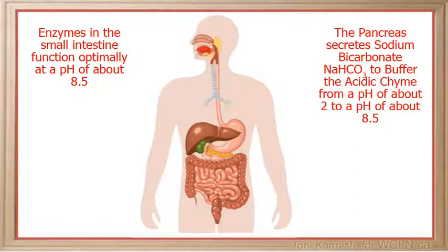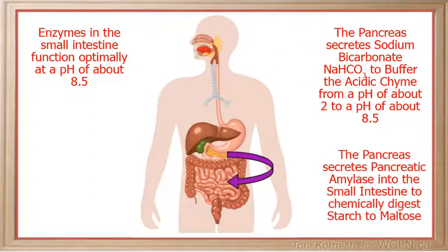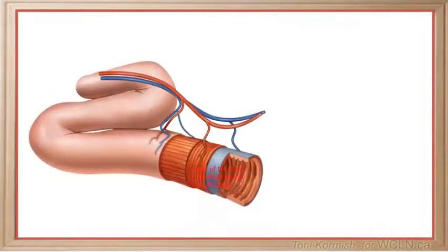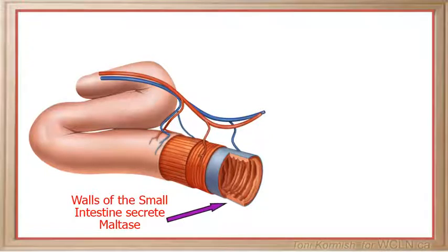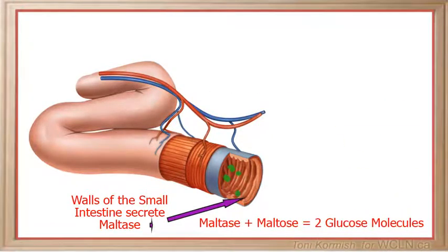As not all of the starch will have been chemically digested in the mouth, some will get through to the small intestine. As a result, a second enzyme called pancreatic amylase is secreted from the pancreas into the small intestine to digest the remaining starch to maltose. The walls of the small intestine then secrete an enzyme called maltase, which digests maltose into two glucose molecules.